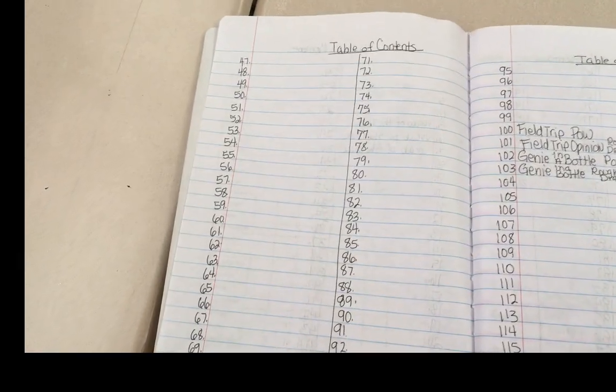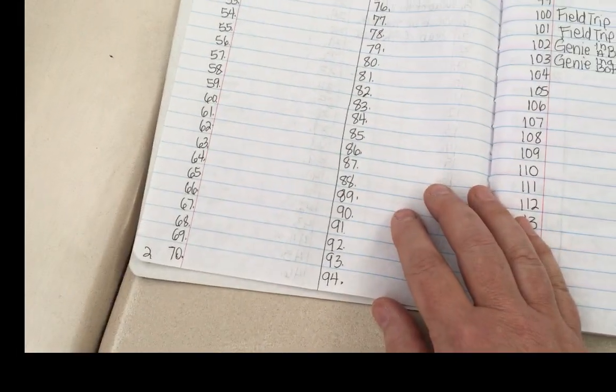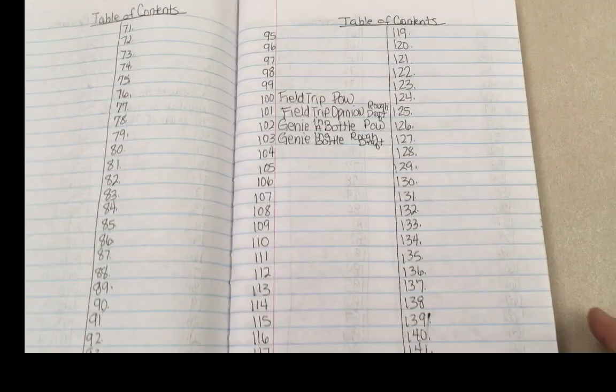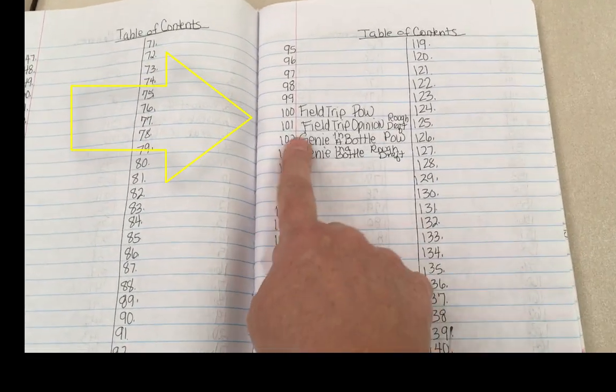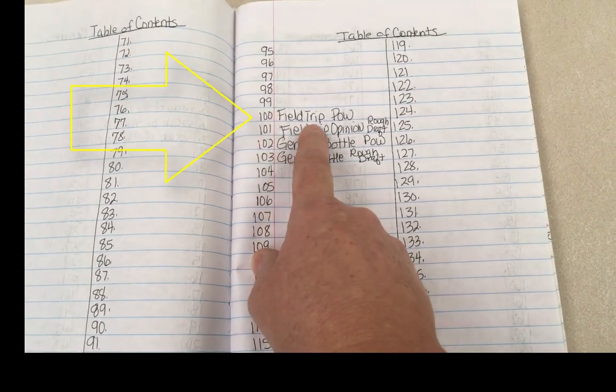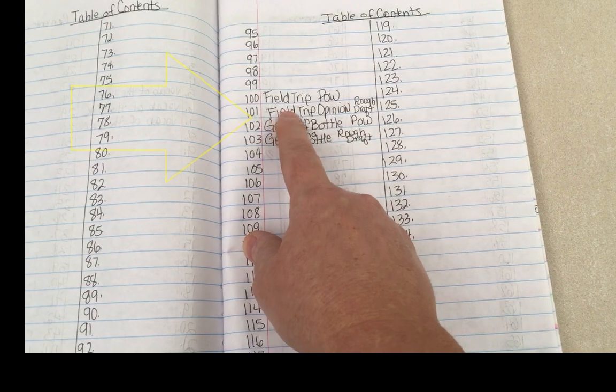So again, the first four pages are the table of contents. You can see here I actually started on the very top line, which is good. And the bottom of every page is also numbered. That's page two. This is page three. Table of contents. And you'll notice here I have on page 100 is where we start the paragraph of the week things.